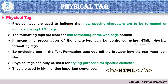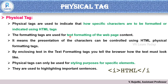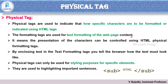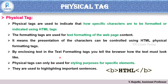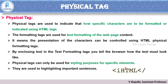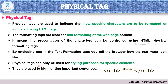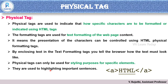Physical tags are used to indicate how specified characters are to be formatted or indicated using HTML tags. The formatting tags are used for text formatting of webpage content. It means the presentation of the character can be controlled using HTML physical tags. By enclosing text in the formatting tags, we tell the browser how the text must look. Physical tags can only be used for styling purposes for a specific element, and they are used for highlighting important sentences.